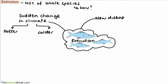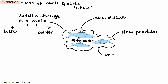We could also have new diseases that are introduced, and that could cause the death of all the individuals if there's a new disease and it spreads among them. We could also have the introduction of new predators. If a new predator moved into the environment, that could mean they're all eaten and they become extinct.